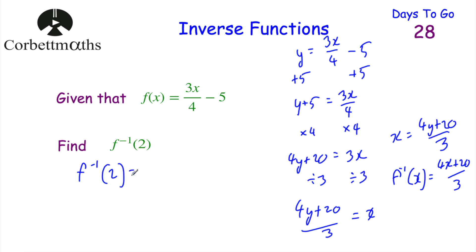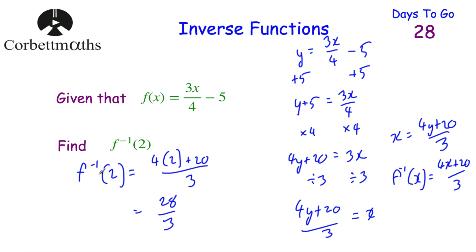Now we substitute x = 2 into the inverse function: f⁻¹(2) = (4 × 2 + 20)/3 = (8 + 20)/3 = 28/3. So f⁻¹(2) = 28/3, or as a mixed number, 9 and a third. Well done if you got that.